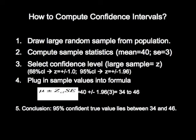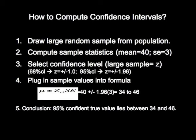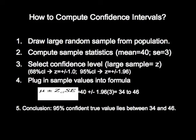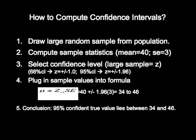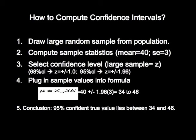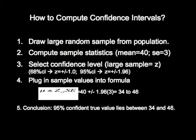You then plug those sample values into the computing formula for a confidence interval, and you get the results that in this particular case we're 95% confident that the true value ranges between 34 and 46.